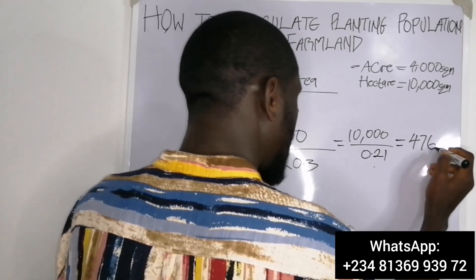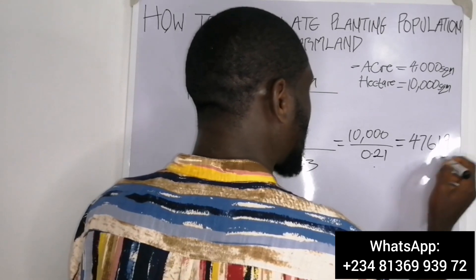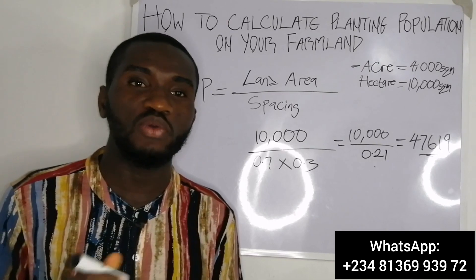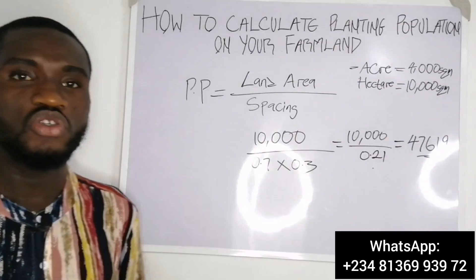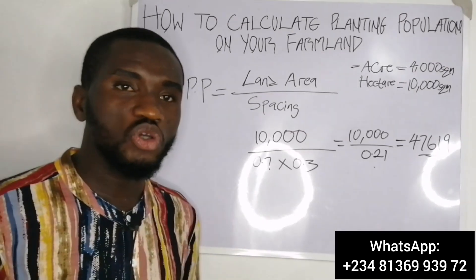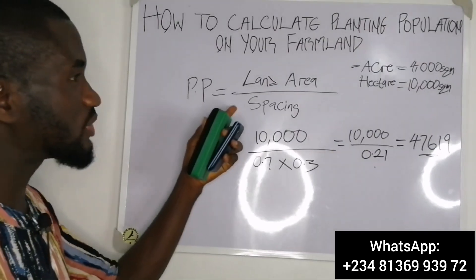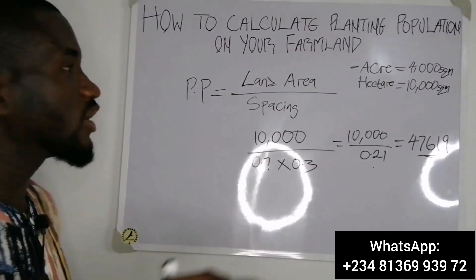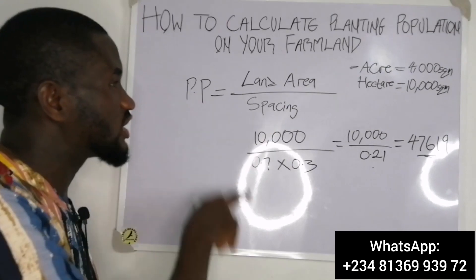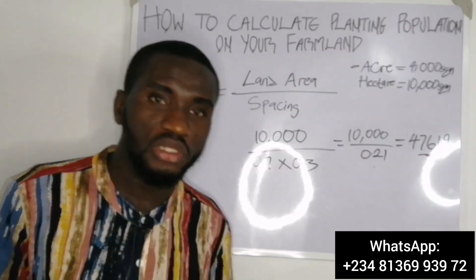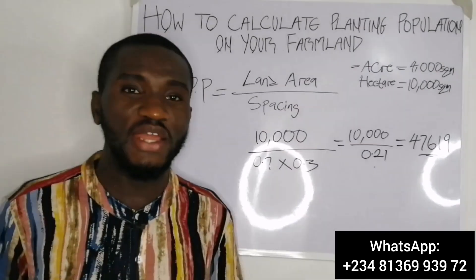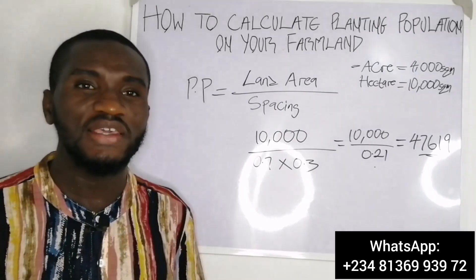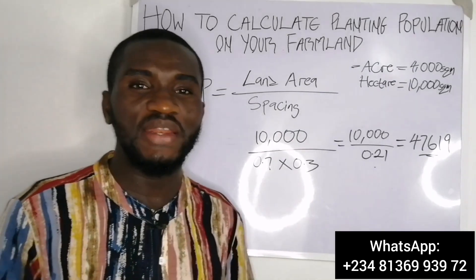That is all about calculating planting population for your farmland. You must know the standard spacing for the crop you want to cultivate, and you must know your land area. Divide the land area by the spacing to get your optimum population. With this, I've come to the end of today's topic. I hope you got value — if you did, please give it a like, share with your friends, and see you on my next video.